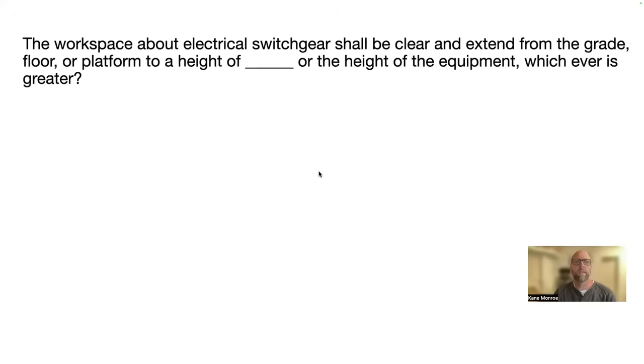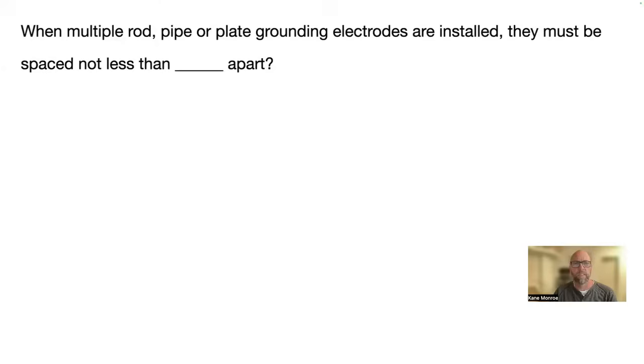All right, the workspace about electrical switchgear shall be clear and extended from the grade floor or platform to the height of blank or the height of the equipment, whichever is greater. So they're asking for the height of the workspace and that's six and a half feet. NEC 110.26 A3. So make sure you guys are highlighting those. 110.26 A3. If I'm going too fast, stop the video and make sure you get this information down.